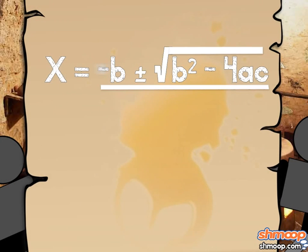This ancient formula reads: x equals negative b plus or minus the square root of b squared minus 4ac over 2a.